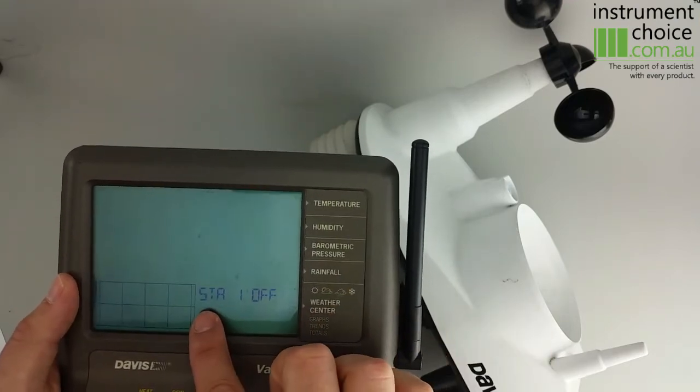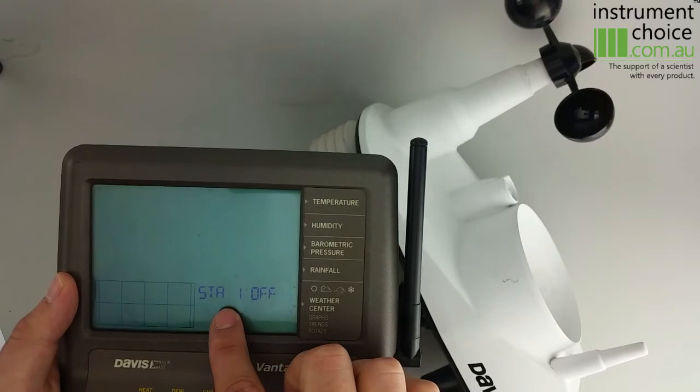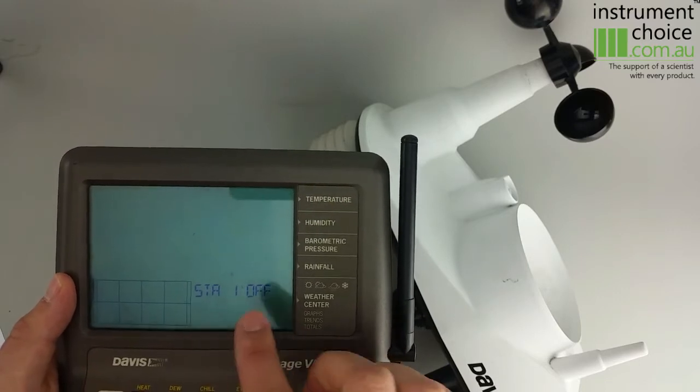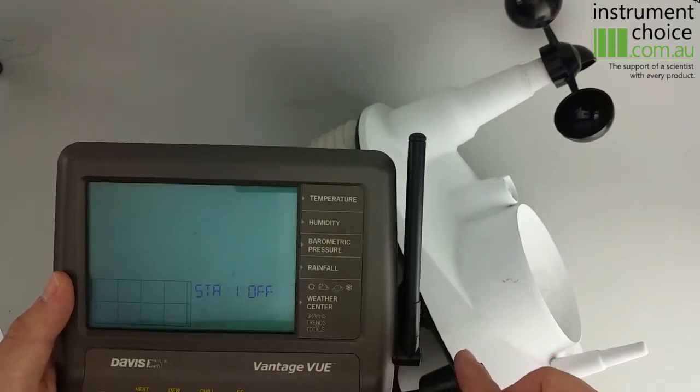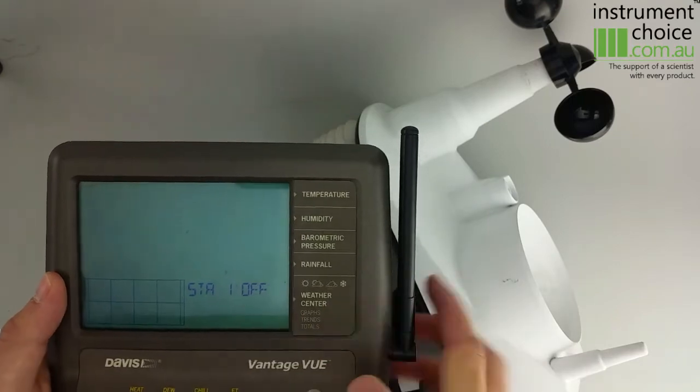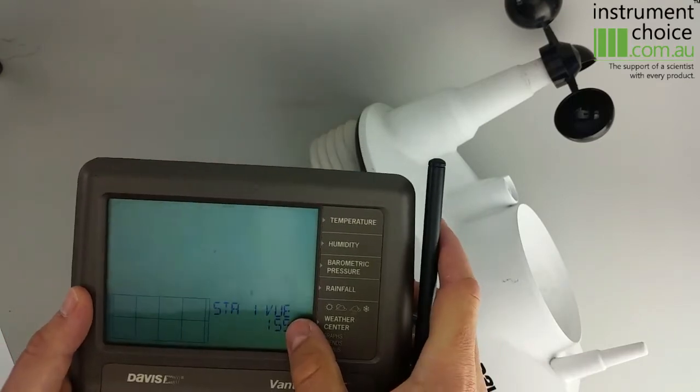As you can see, it'll say STA 1. This refers to the station that you're looking to set it up on. As a default, most Vantage Vue units will be on Transmitter 1. So all you'll need to do is hit the up arrow to change it to View ISS.